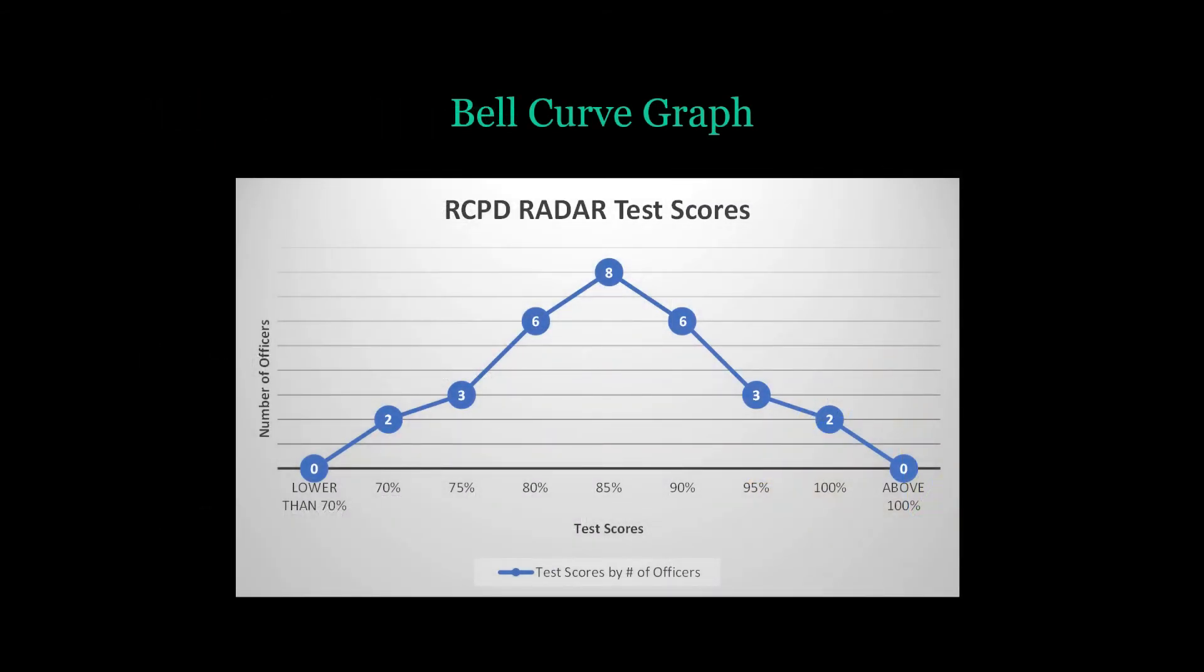This bell curve graph shows the peak of the curve, the average score of the sample officer's tests. The rise on the left of the peak shows the low average scores of the sample, while the negative slope shows the high average of the sample officer's test scores. While the test was not created for any test taker to score above 100%, the test can be scored below a passing percentage of 70%. Any score below this 70% is not graded beyond identifying it as a failed attempt.